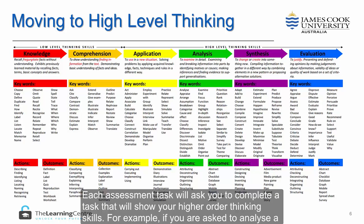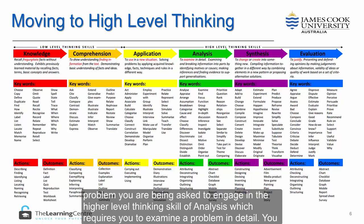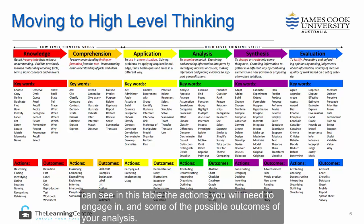Each assessment task will ask you to complete a task that will show your higher order thinking skills. For example, if you are asked to analyse a problem, you are being asked to engage in the higher level thinking skill of analysis, which requires you to examine a problem in detail. You can see in this table the actions you will need to engage in and some of the possible outcomes of your analysis.